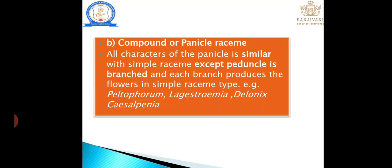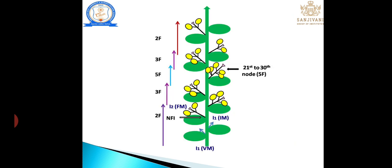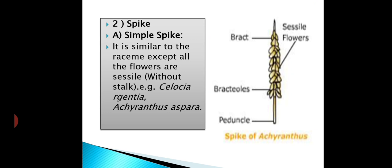Compound raceme (panicle): it is similar to a simple raceme, but the peduncle is a branched structure. Hence it is known as a compound raceme or panicle. Next is spike: it is similar to a raceme, but flowers are sessile — that means without a stalk. For example: Amaranthus and Celosia.